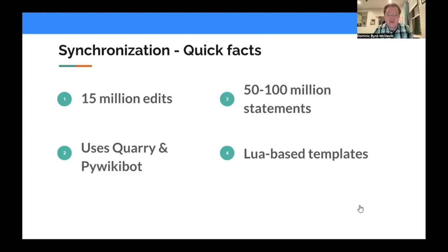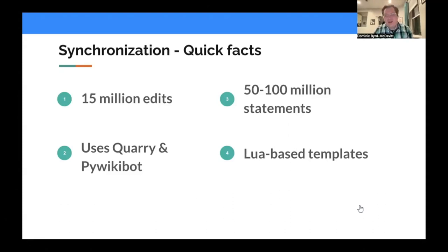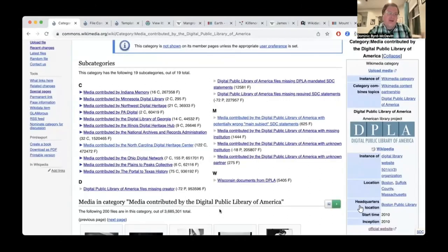The technology we developed uses Wikimedia database queries — I use Quarry for that. The code for the bot is written in Python, using PyWikiBot. And on-wiki, it relies on Lua-based templates to display the metadata, which I will show you right now. I have some tabs queued up, so I'm going to walk you through how the structured data part of this project works.